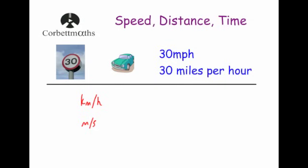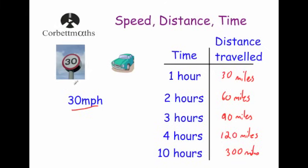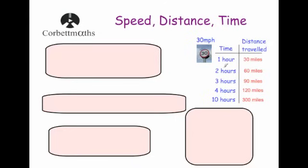Let's look at speed in a little more detail. At 30 miles per hour, in one hour the car drives 30 miles, two hours 60 miles, three hours 90 miles, four hours 120 miles, ten hours 300 miles. Notice: 30÷1=30, 60÷2=30, 90÷3=30, 120÷4=30, 300÷10=30. So in every situation, whenever you divide the distance traveled by the time, you always get the speed.